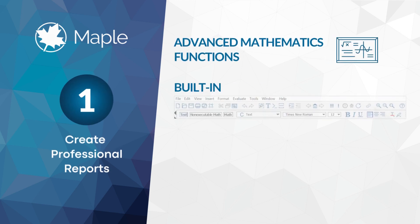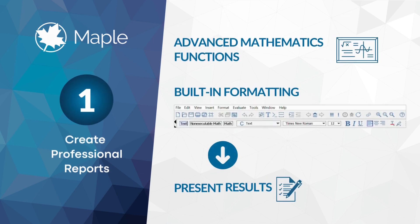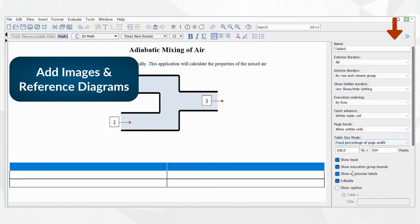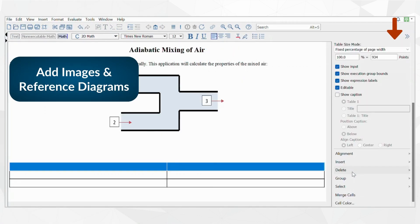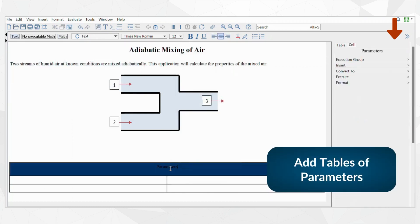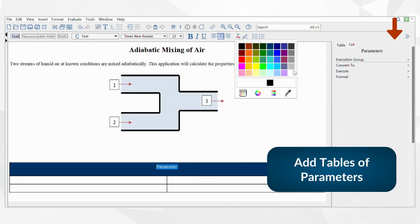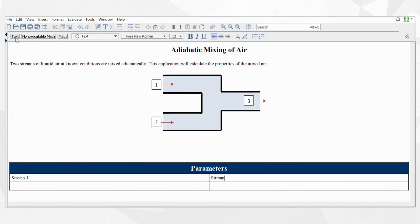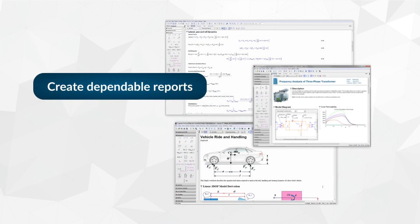You can use the wide range of formatting features that are built into Maple. Adding system diagrams, parameter tables, and requirements makes it easy to create a structured view of the characteristics of the system. This results in a clear and dependable report that can be readily shared with colleagues and management.